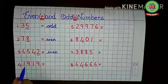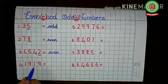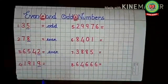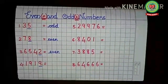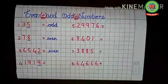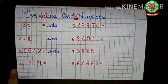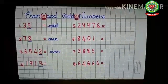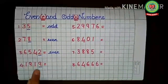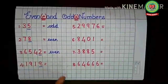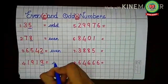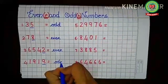Next is 1919. We look at the last digit only — nine. Checking the table of two: two, four, six, eight, ten. Nine does not come in the table of two, so 1919 is an odd number.